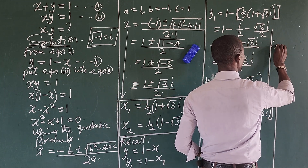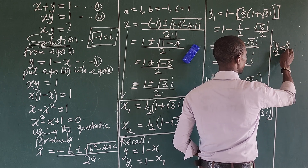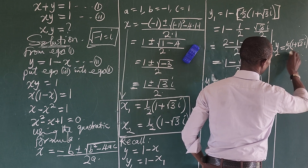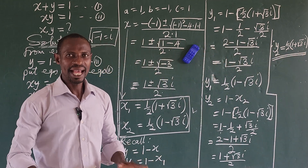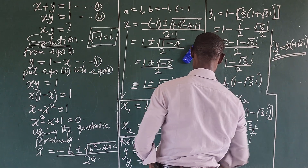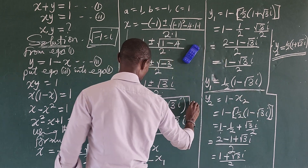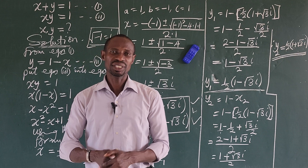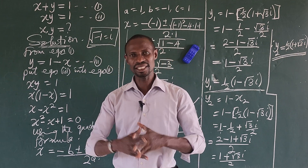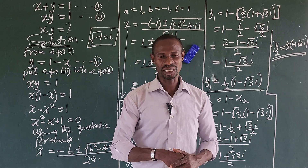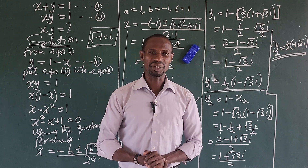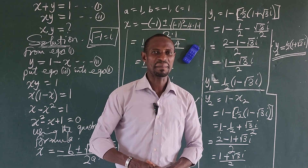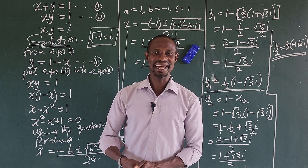So we can conclude: y₂ equals one-half bracket 1 plus square root of 3 iota, and y₁ equals one-half bracket 1 minus square root of 3 iota, with x₁ and x₂ as found earlier. This brings us to the end of the math class. If you have any questions about this approach, drop them in the comment section. I'll leave a link to a similar problem solved using a different approach in the description below. Thank you for watching — we love you and will keep loving you until the end of time. Bye for now.